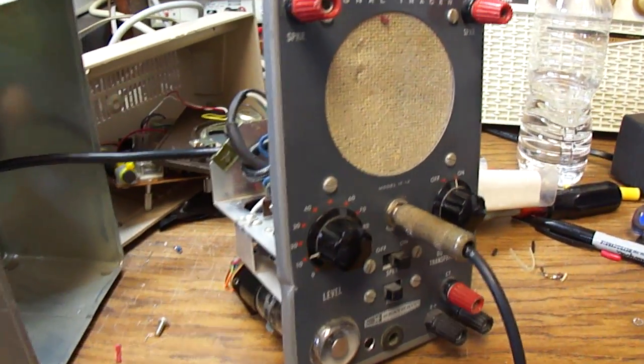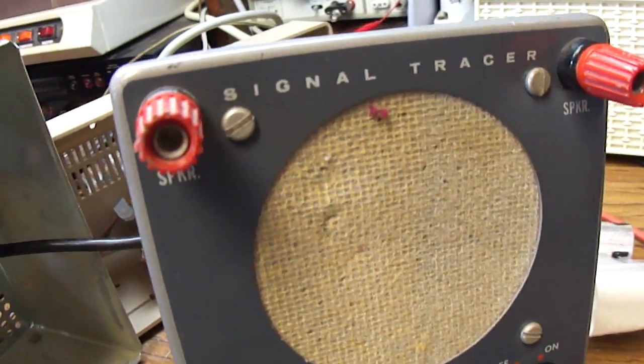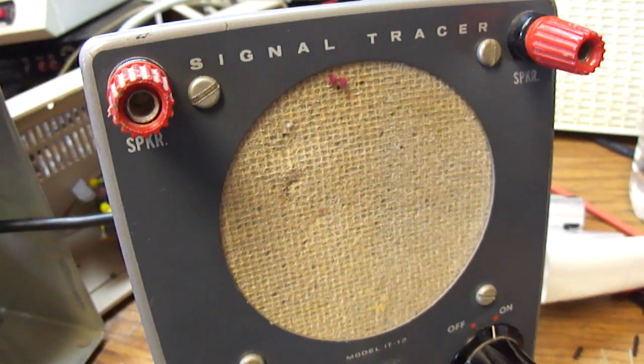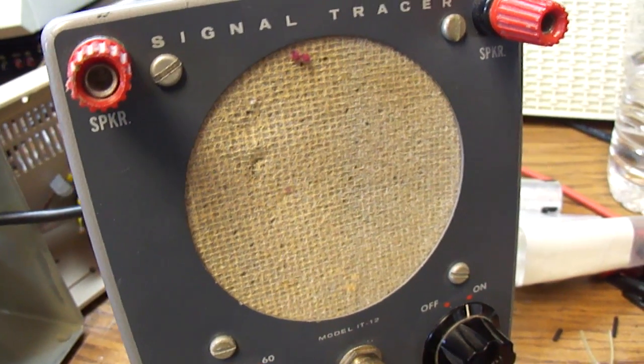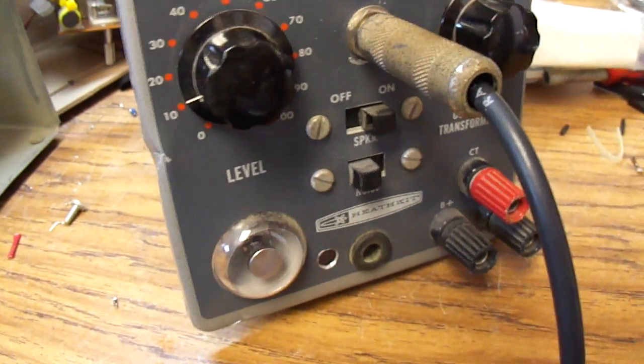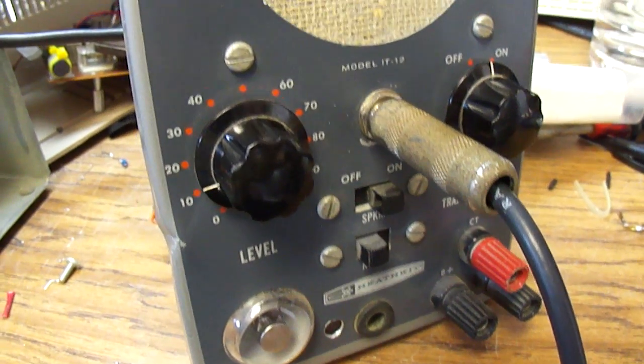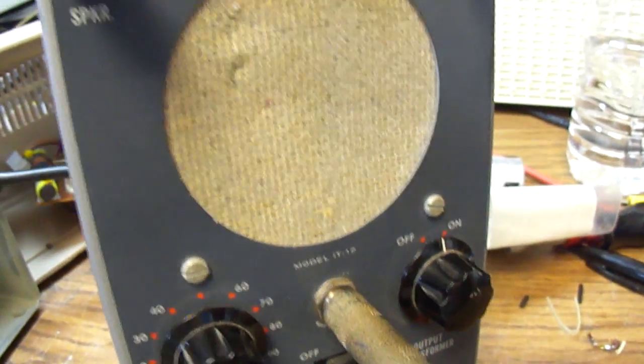Here is a 1974 Heathkit signal tracer. This is just a small tube type amplifier and a tuning eye just used to detect the presence of audio signals.